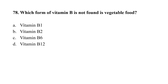Question number 78. Which form of vitamin B is not found in vegetable food? Option A, Vitamin B1; Option B, Vitamin B2; Option C, Vitamin B6; Option D, Vitamin B12. The correct option is D, Vitamin B12, which cannot be found in vegetable food.